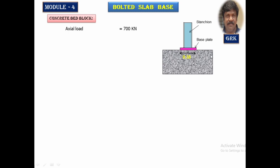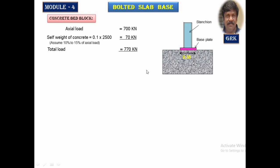Let us design the concrete block below the base slab. The load acting is 700 kN. We take an additional 10 to 15 percent of the column load to account for the self-weight of the concrete. Here, 10 percent is taken, giving 70 kN. Total load = 770 kN.